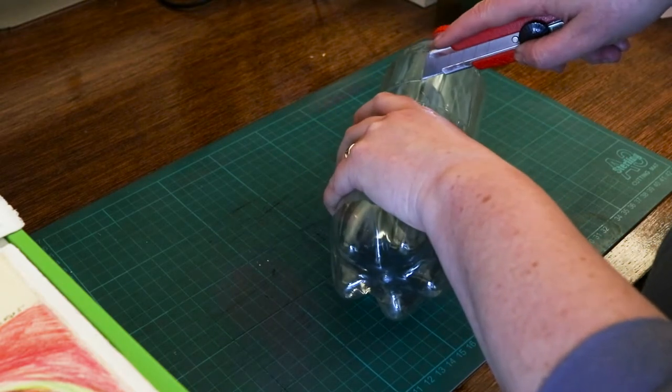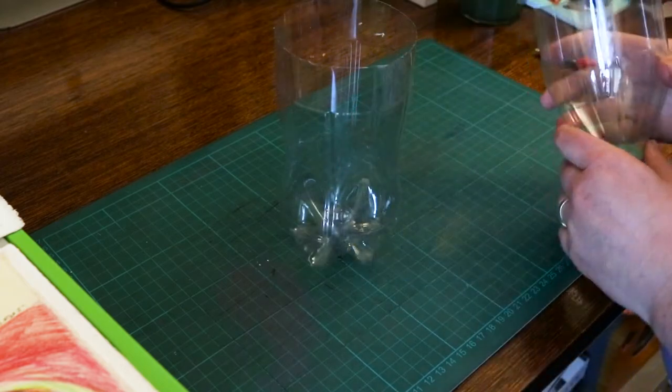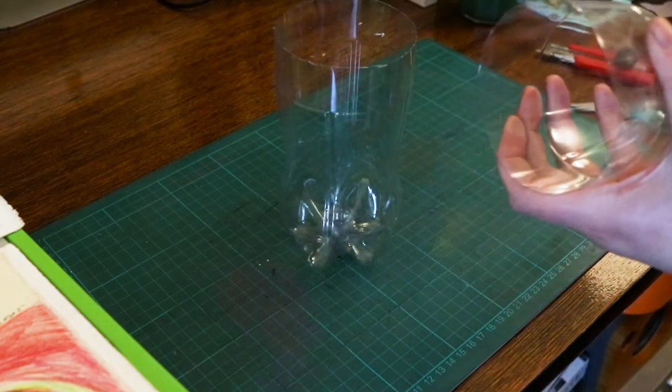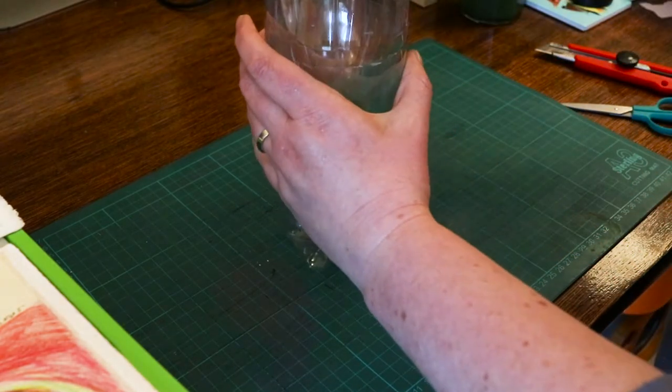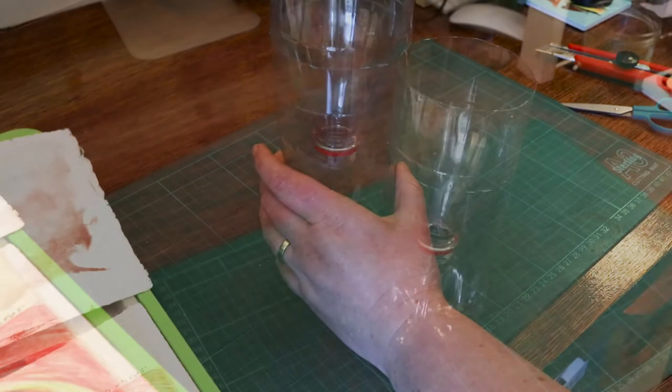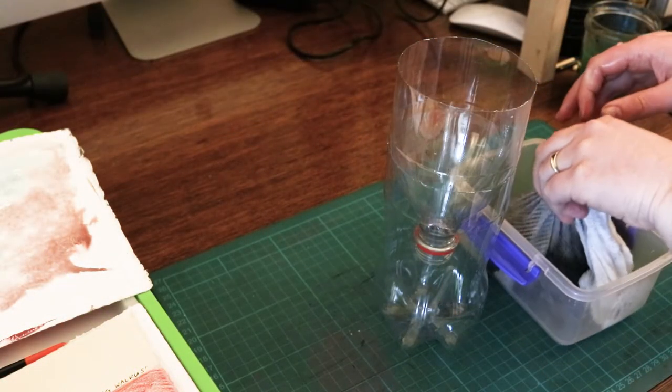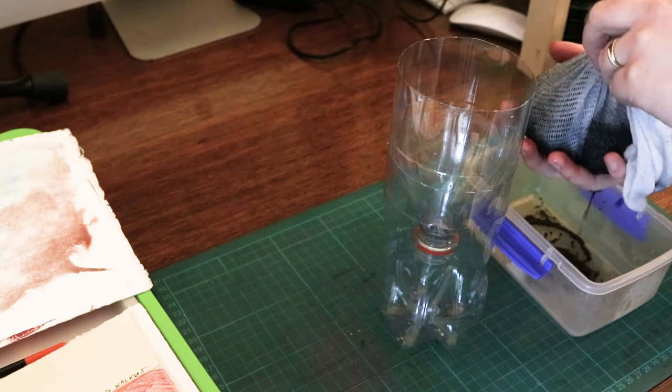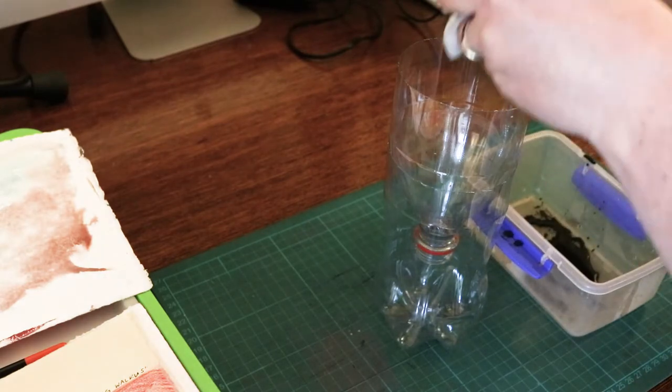I cut my bottle in half carefully with a utility knife and I inverted the top half. I stuffed the bag of charcoal into the bottle, pushing the end with the excess fabric first to act as an extra layer of filtering.